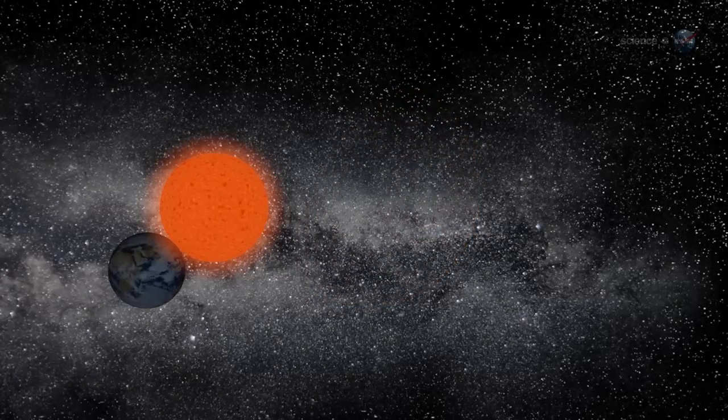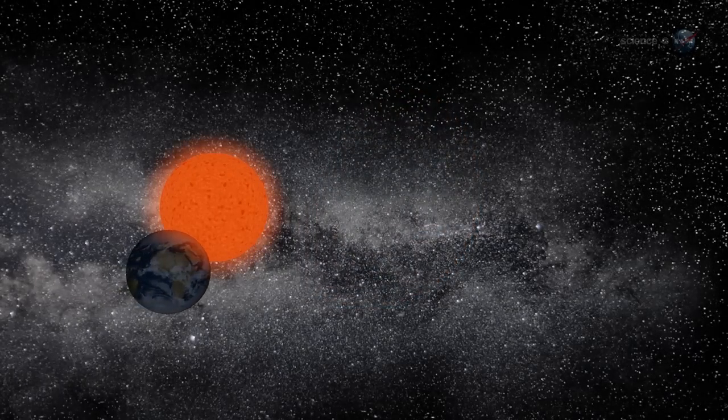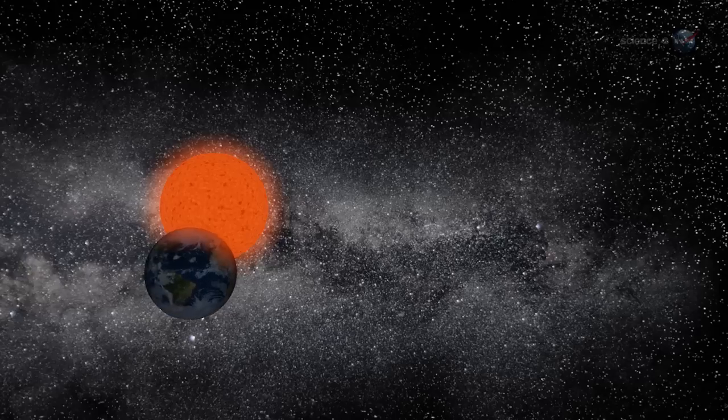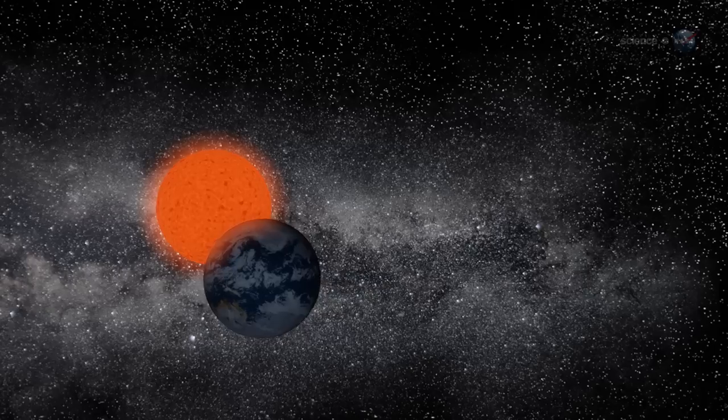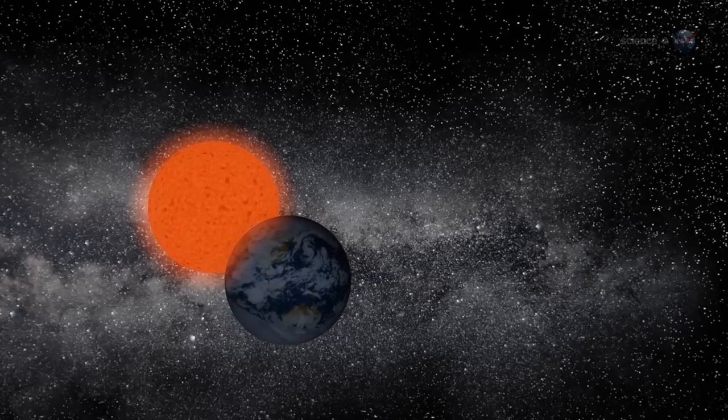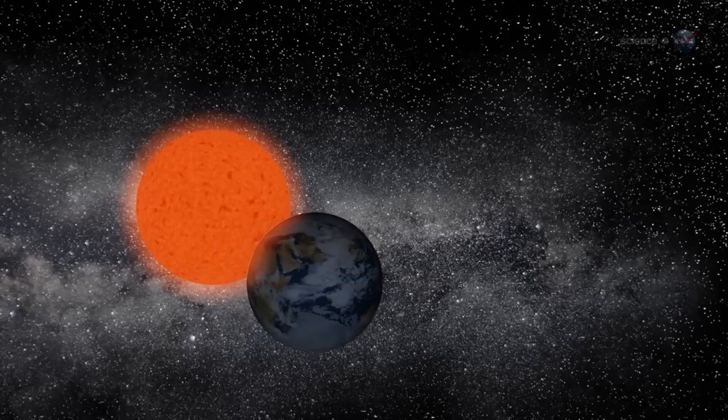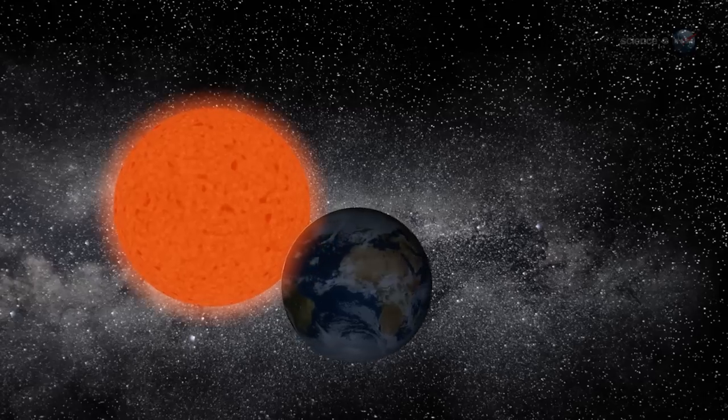The fate of Earth is not a certainty, however. Some researchers believe that Earth's orbit might spiral outward, keeping the planet at a safe distance from the approaching inferno. This could happen if solar winds carry away a significant fraction of the Sun's mass in the years leading up to the red giant phase.